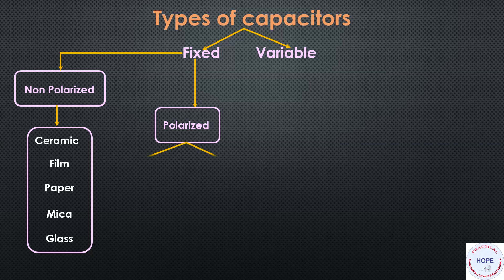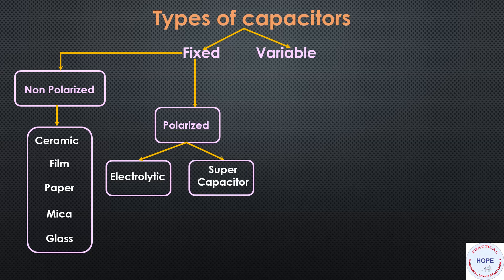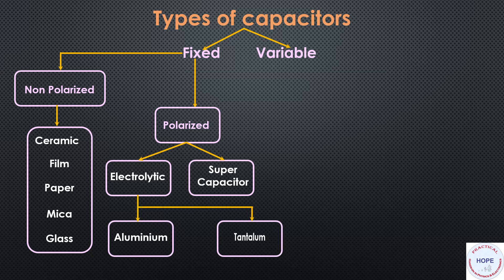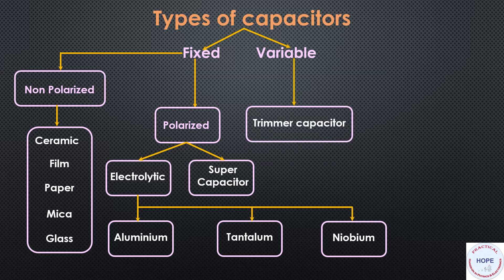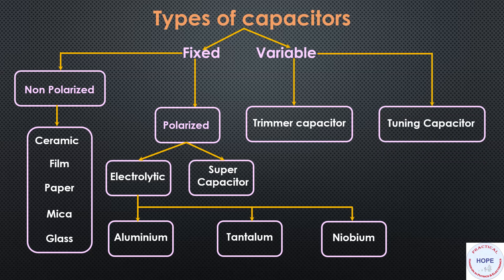Polarized capacitors can further be divided into two categories: electrolytic and supercapacitors. Electrolytic capacitors can be aluminum based, tantalum based, or niobium based. Variable capacitors can be of two types: trimmer capacitors and tuning capacitors. We will study them in detail.